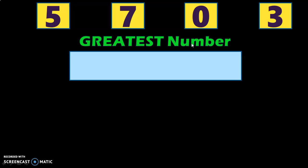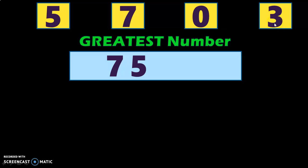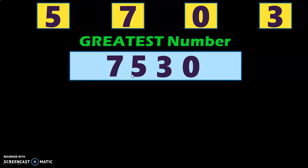So here, the biggest number which we have is 7, so first write down the number 7. The number which is smaller than 7 is 5. The number which is smaller than 5 is 3. And the smallest number among the given four digits is 0. So the greatest number formed using the four given digits is 7530.